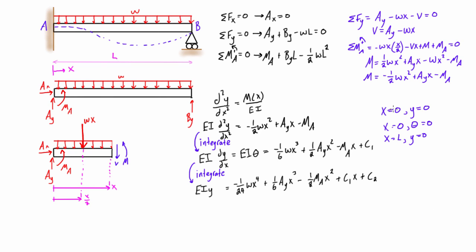If we take this first boundary condition, x equals 0, y equals 0, and we plug that into this expression, y will be 0, this term will go to 0 because x equals 0, this x will go to 0, this will go to 0, and we're going to find that our second integration constant here, c2, is going to have to be equal to 0.